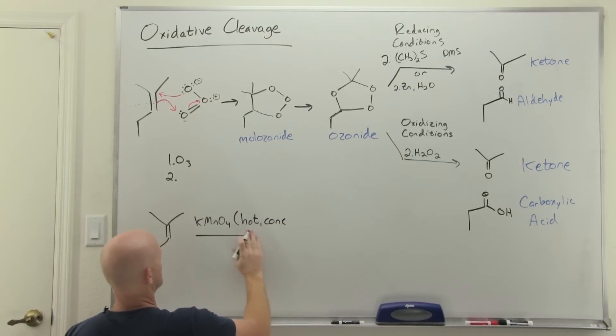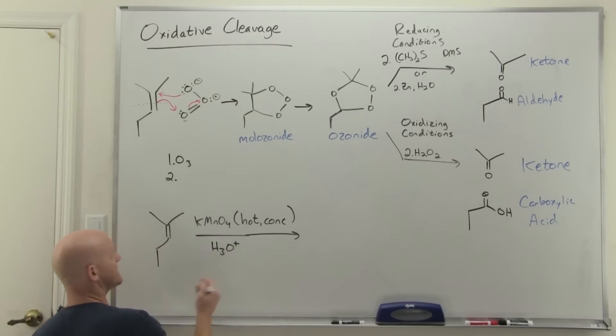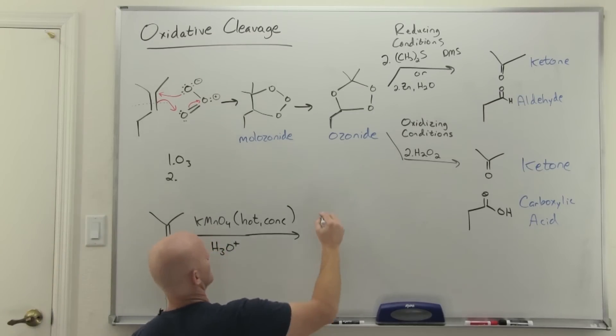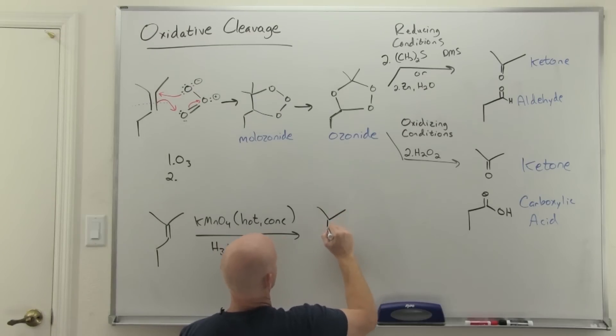If you recall, we used permanganate a little bit ago to do syn dihydroxylation, but we used it cold and dilute. Well now we're using it under much harsher conditions - we're using it hot, concentrated, and under acidic conditions. This does the same thing as ozonolysis under oxidizing conditions.